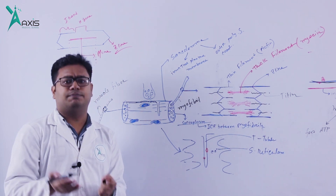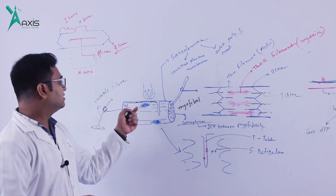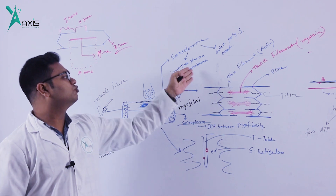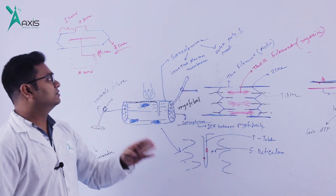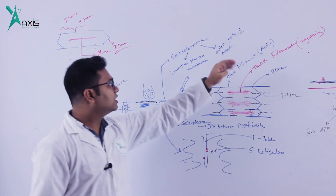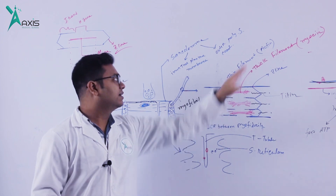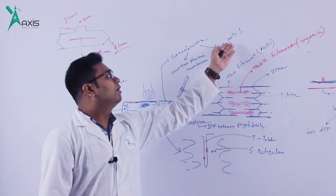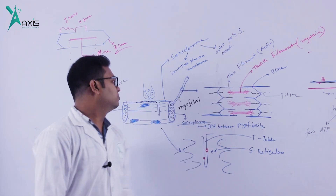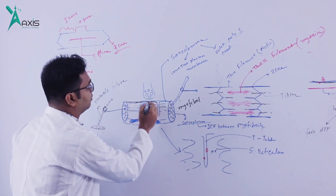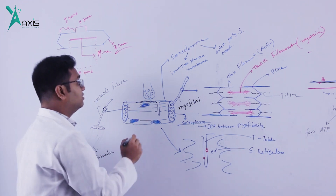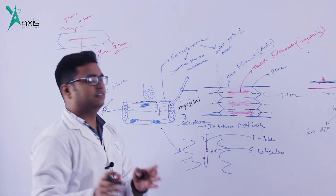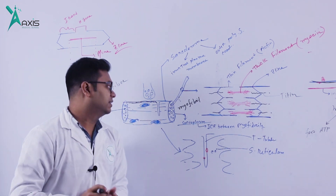The sarcolemma is the muscle fiber membrane — equivalent to what we normally call the plasma membrane. The sarcolemma has two parts: the inner true plasma membrane and the outer polysaccharide coat.